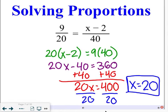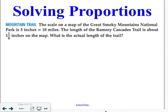The other time that ratios and proportions are very helpful is when you are setting up word problems. It says the scale of the map of the Great Smoky Mountains National Park is 3 inches = 10 miles. The length of the Ramsey Cascades trail is about 1 1⁄8 inch on the map. What is the actual length of the trail? So, the first thing we need to do is set up a proportion. This is the first ratio that they give us. So, 3 inches over 10 miles.